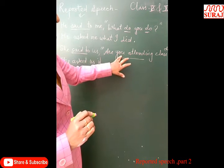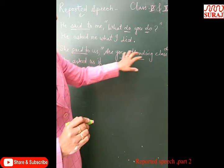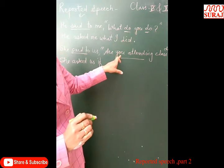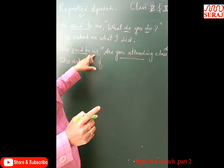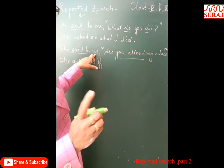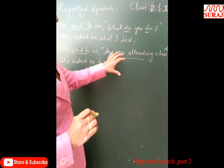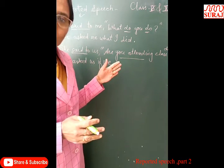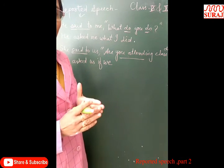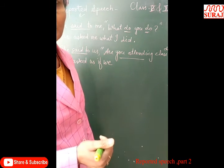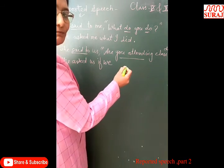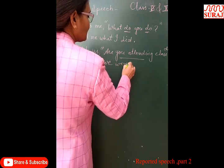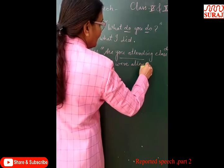'Are' is the auxiliary verb, and 'you' is the subject, 'attending' is the main verb. The subject 'you' is second person, changed according to the object 'us.' The nominative case of 'us' is 'we.' Now for tense: 'are you attending' is present continuous tense. Present continuous changes to past continuous. Structure: Subject + was/were + V1+ing. Since 'we' is plural, we use 'were': She asked us if we were attending class in Delhi.